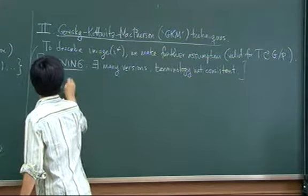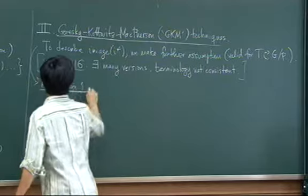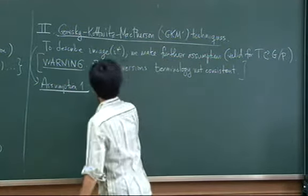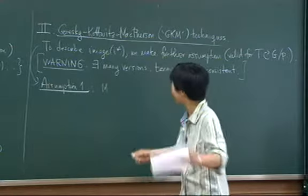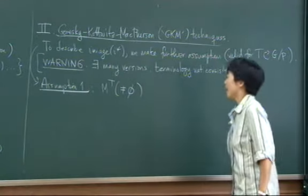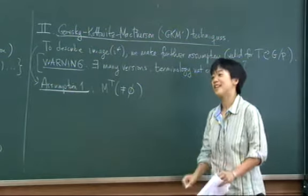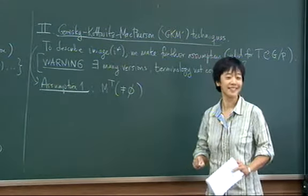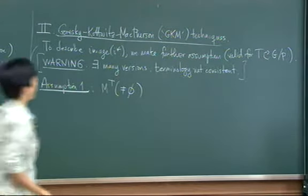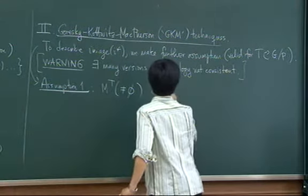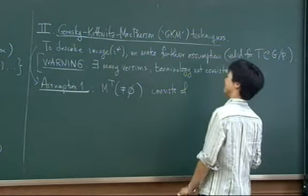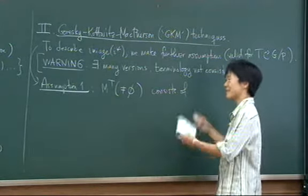Here's the first assumption. This is what we were speaking about earlier: M^T consists of finitely many isolated points. So therefore this part is very trivial — actually I don't need finitely many, just isolated.